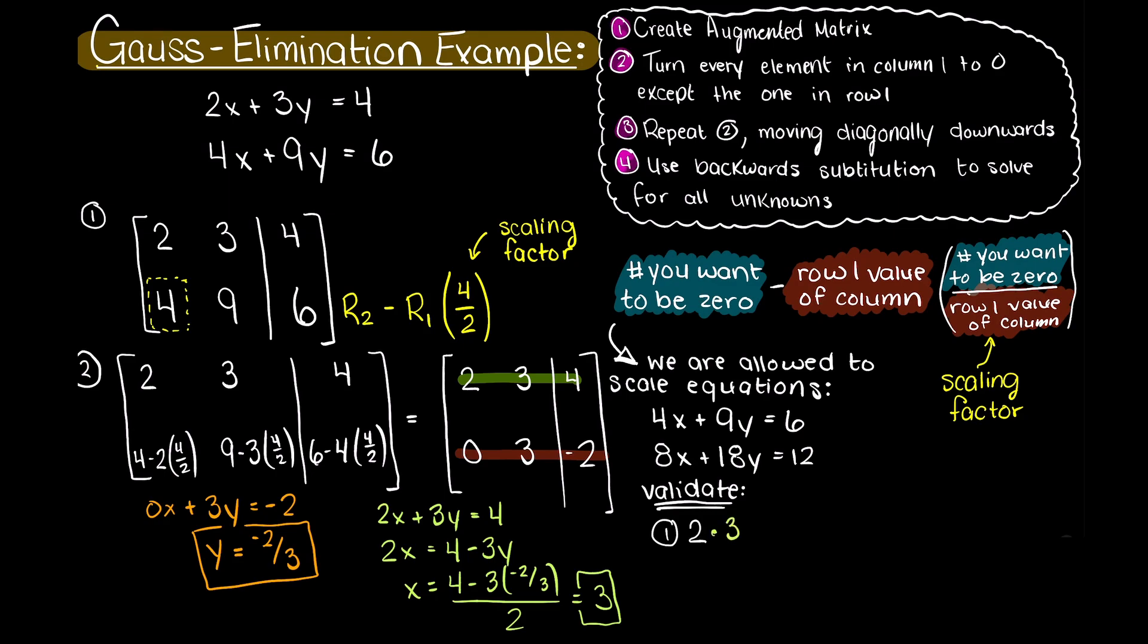Firstly, we have 2 times 3 plus 3 times minus 2 over 3 equals 4. This works out to 6 minus 2 equals 4, which checks out. Therefore, our newly found variables make sense with equation 1.